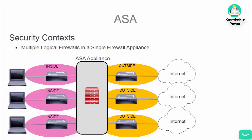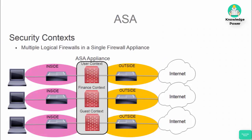ASAs can be broken up into multiple logical firewalls if they are placed into multi-context mode. When ASAs are in multi-context mode, one physical firewall can allocate specific interfaces to multiple logical firewalls. For high security networks, it may be required to force certain networks through dedicated firewalls for additional security.